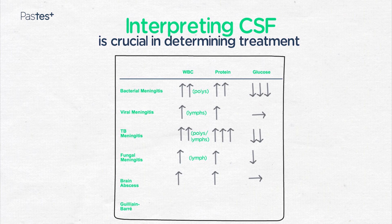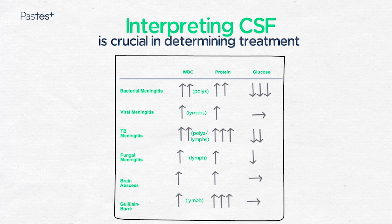Guillain-Barré is after the infection has been. Therefore, lymphocytes may be present but it is mainly very high protein and a normal glucose.